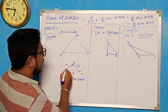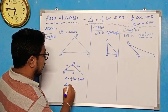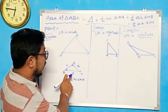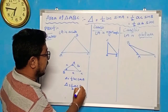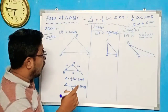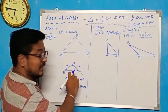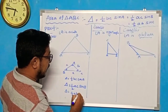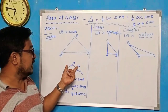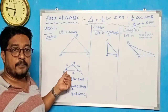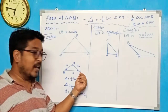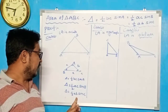Suppose angle B is the included angle. Area of triangle is equal to half — the remaining sides are A and C — that is half AC sin B. Suppose the included angle is C. The remaining two sides are A and B, so that gives half AB sin C. This is the rule.